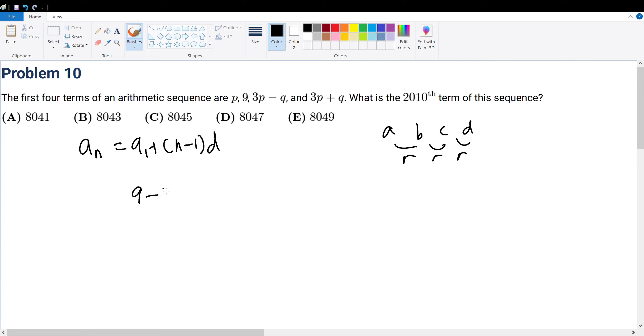So that means 9 minus p must give r, and for example, 3p minus q minus 9 must also give r. So given this, we can solve the question.